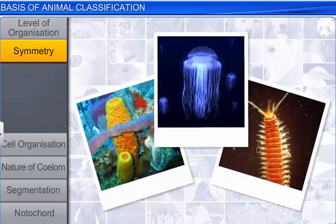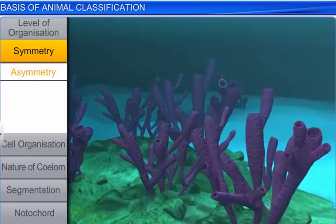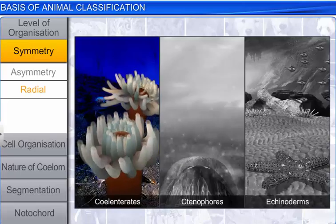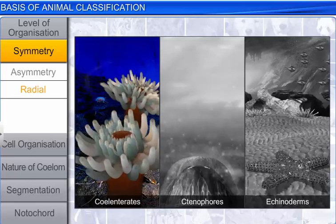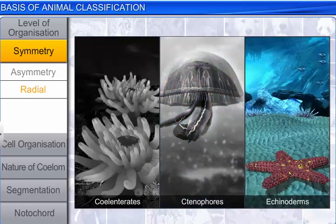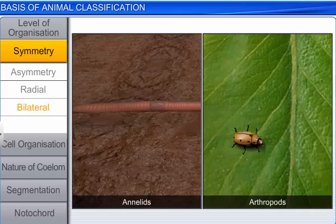Symmetry is another feature by which animals are classified. They can be asymmetrical, like sponges, or have radial symmetry, like coelenterates, ctenophores, and echinoderms. However, most animals, like annelids and arthropods, have bilateral symmetry.